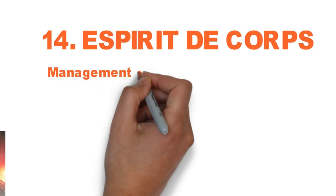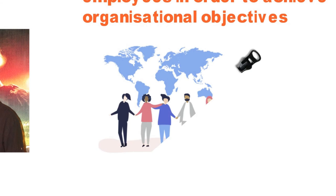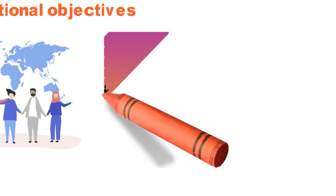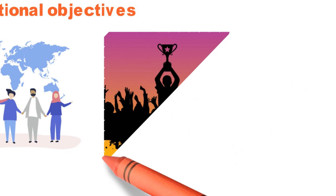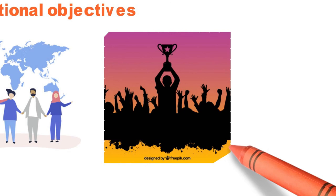And the last principle, principle number fourteen: Esprit de Corps. Management should promote a team spirit of unity and harmony among employees in order to achieve common organizational objectives. Management should promote teamwork and coordination. For example, in the case of sports, all team members and personnel who play or work for their respective teams should not have the thinking that if they win, it is the captain alone who will be rewarded — they must work for the team. Similarly, this feeling should be developed among all members of the organization.